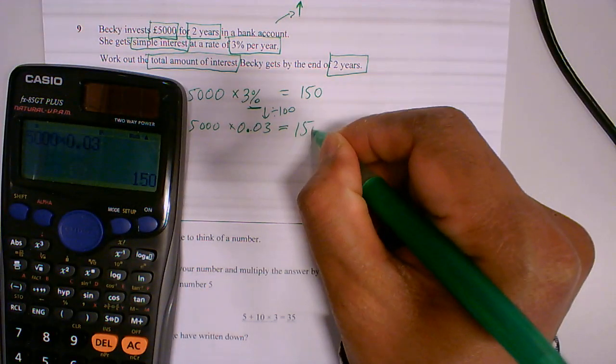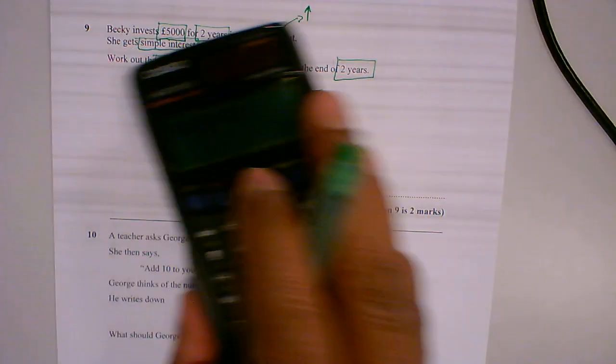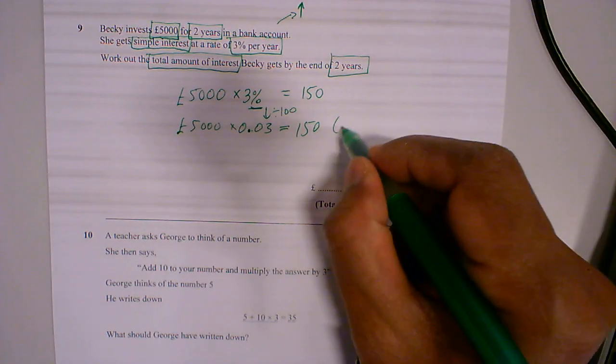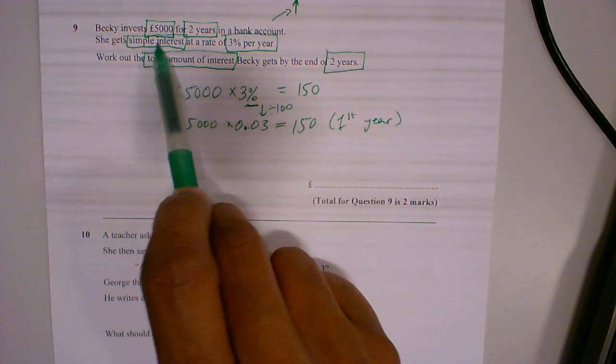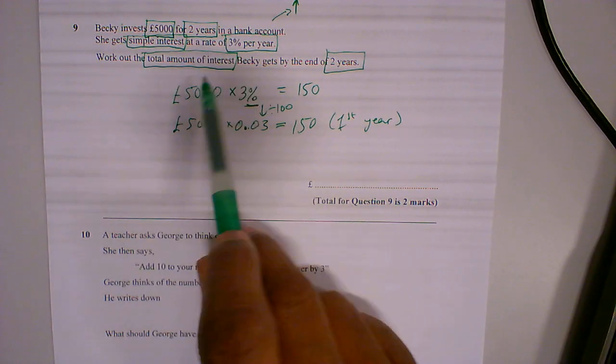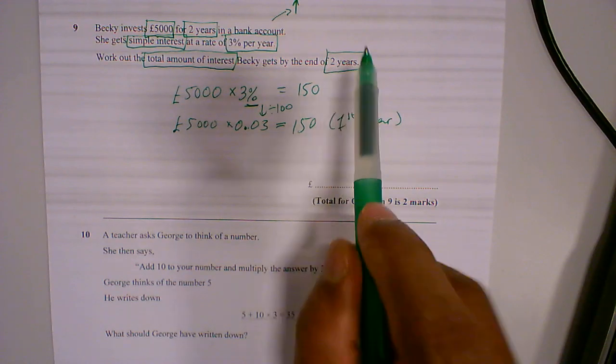So that's the interest in the first year. And it's simple interest. So all we do now is multiply it by two years.